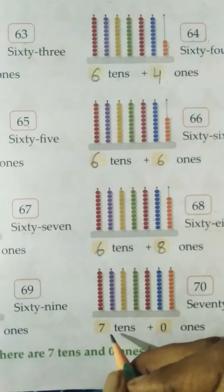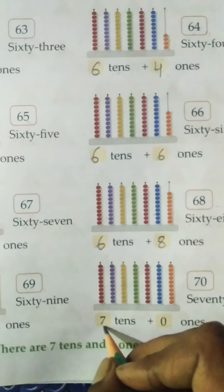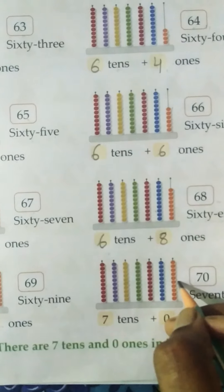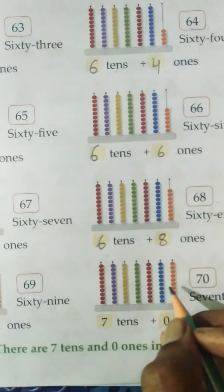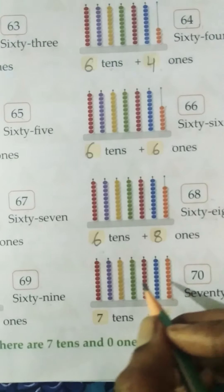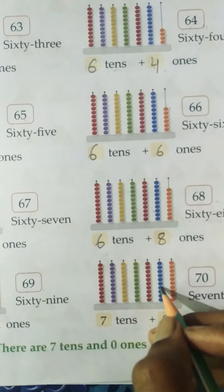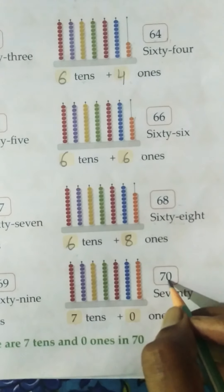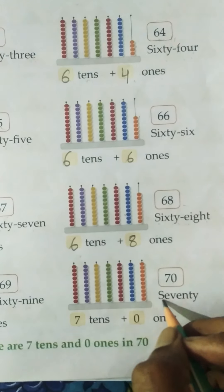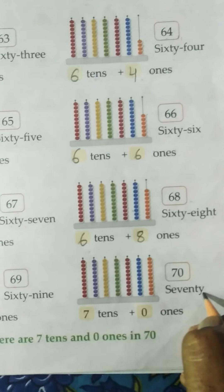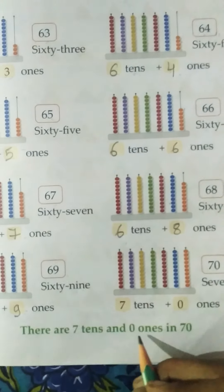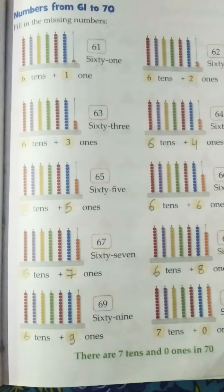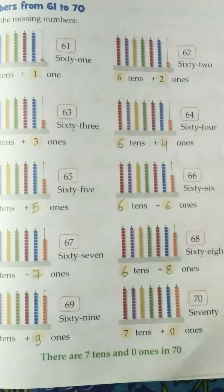And the last number on this page. How many tens? 7 tens — 1, 2, 3, 4, 5, 6, 7. There are 10 dots in every line, so 10, 20, 30, 40, 50, 60, 70. 7 tens plus 0 ones is equal to 70. Spelling: S-E-V-E-N-T-Y (70). There are 7 tens and 0 ones in 70. This page is completed. We will continue the same chapter tomorrow. Thank you.